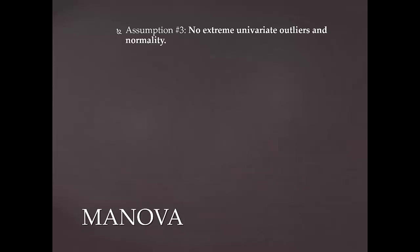The remaining assumptions, starting with assumption three, need to be tested after the data is collected. The third assumption is that there are no extreme univariate outliers and there is univariate normality. For each dependent variable, you will need to create a box plot to ensure that there are no univariate outliers, and more specifically no univariate extreme outliers. Then there is univariate normality — the assumption that the distributions for the dependent variables are normal. You can check for normality in a number of ways.